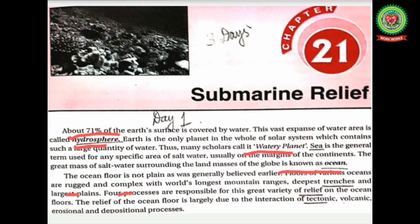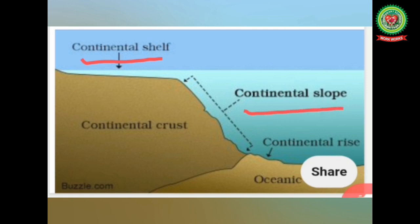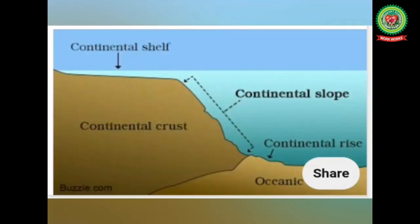Oceans contain the world's longest mountain ranges and deepest trenches. Four processes are responsible for the great variety of relief on the ocean floors: the interaction of tectonic, volcanic, erosion, and depositional processes. The ocean floor can be divided into four major divisions: continental shelf, continental slope, continental rise, and abyssal plain. Let us discuss these four divisions in detail with pictures and diagrams.